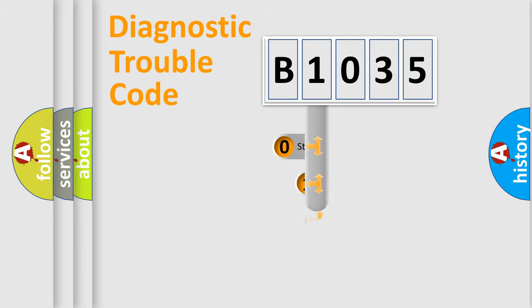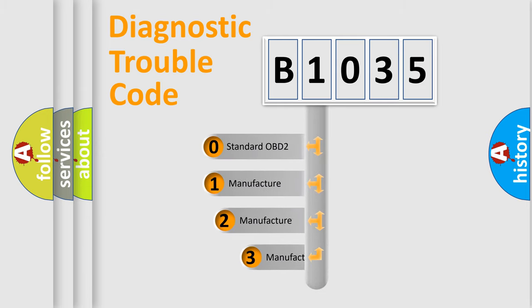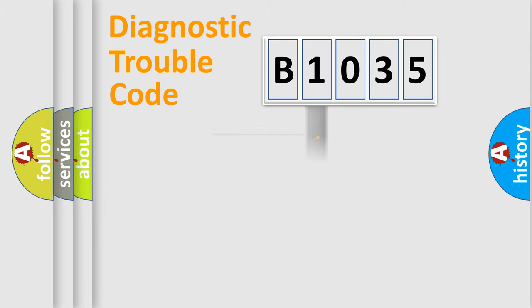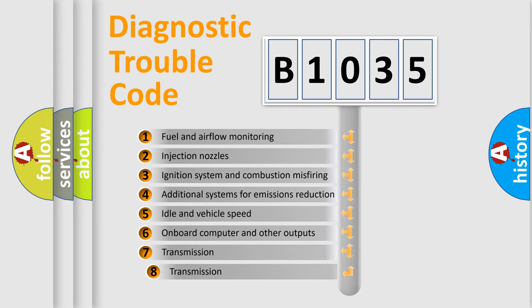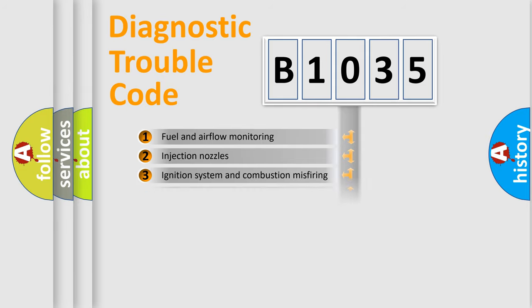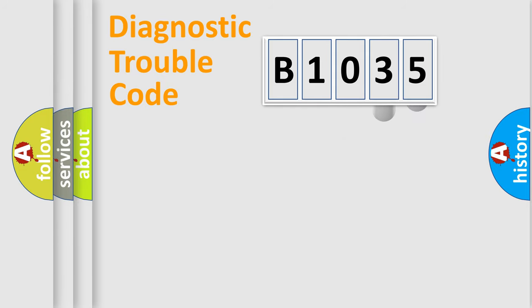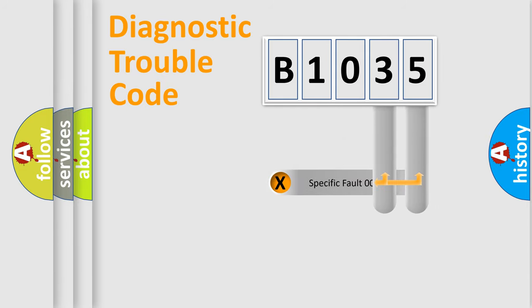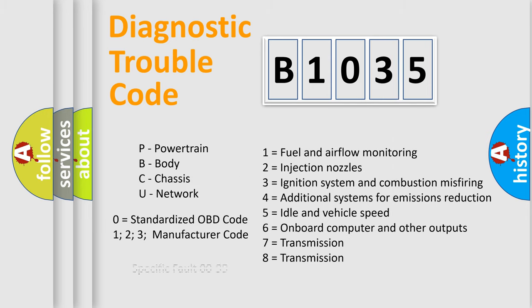This distribution is defined in the first character of the code. If the second character is expressed as zero, it is a standardized error. In the case of numbers 1, 2, or 3, it is a manufacturer-specific error. The third character specifies a subset of errors. This distribution is valid only for the standardized DTC code, and only the last two characters define the specific fault of the group.